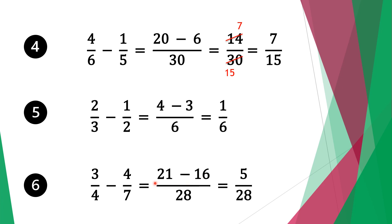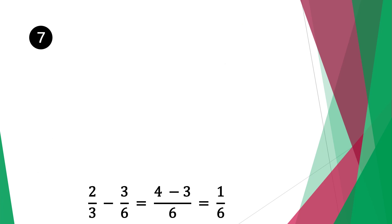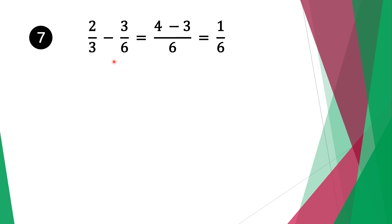Twenty-one minus sixteen is five. Move along the twenty-eight as it is, so our solution is five over twenty-eight. Moving on to question seven, we have two-thirds minus three over six. Six is the common factor for six and three, so we take six as the common factor. Six divided by three is two, two times two is four.